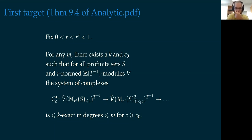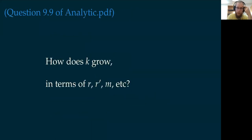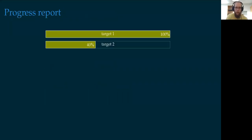We also focused on a question Scholze asks in his lecture notes: how do the constants that appear in the first target grow in terms of other input parameters? We've finished this first target and are now working on proving the main result by reducing it to this first target. We're not yet really halfway with that second half — my intuition says we're almost halfway.